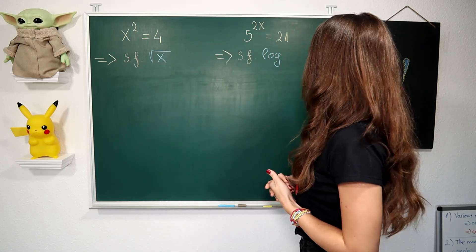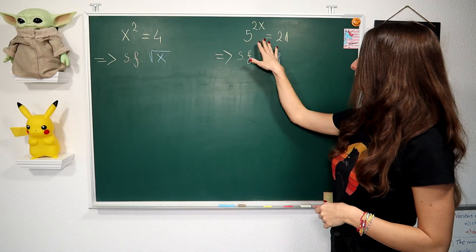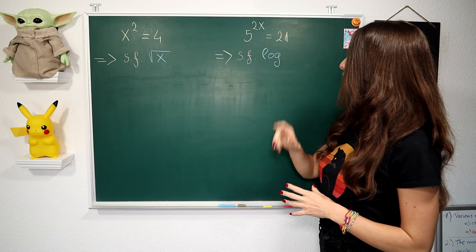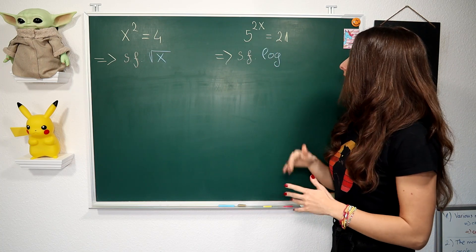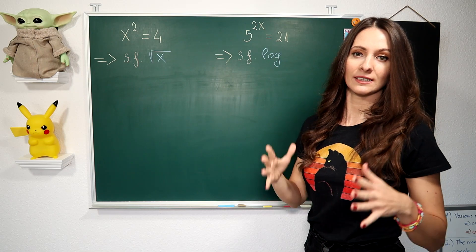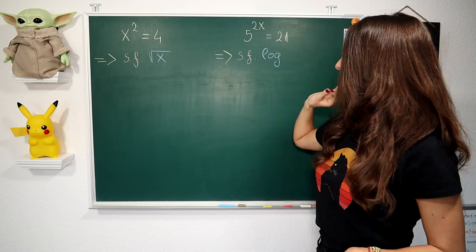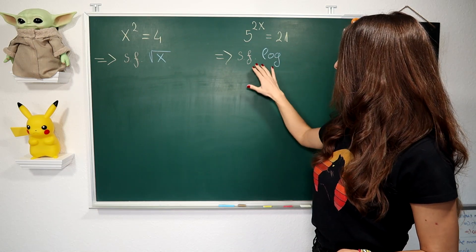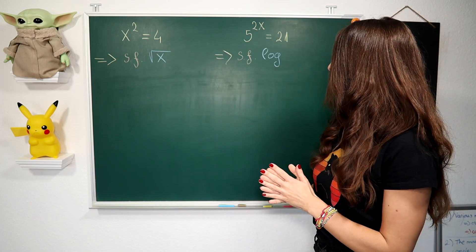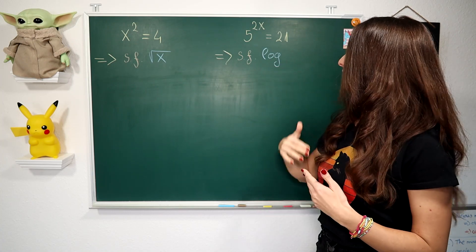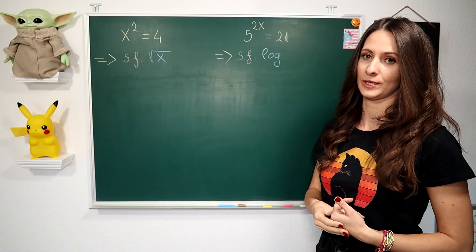What if we have something like this? We have the exponential equation 5^(2x) = 21. This equation can be solved by taking the logarithm of both sides. That means this equation is solvable in terms of the logarithm, which is the inverse of a very simple exponential equation.